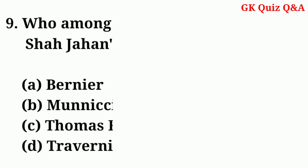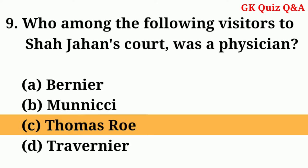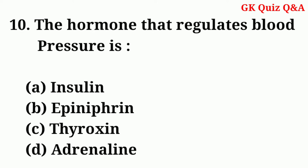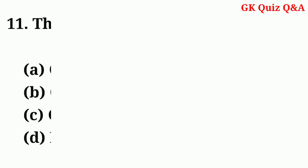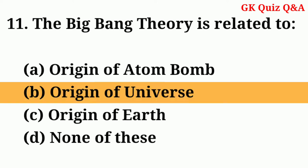Who among the following visitors to Shah Jahan's court was a physician? Answer: C — Thomas Roe. The hormone that regulates blood pressure is — Answer: D — Adrenaline.